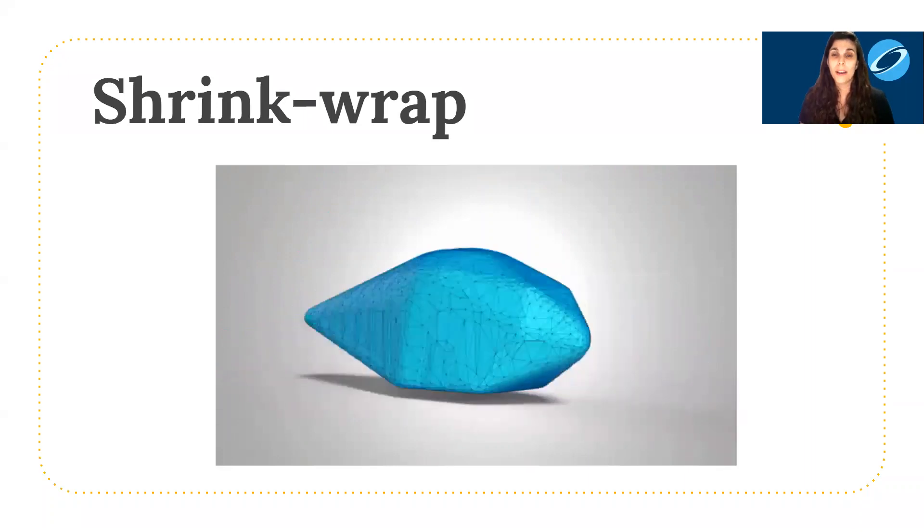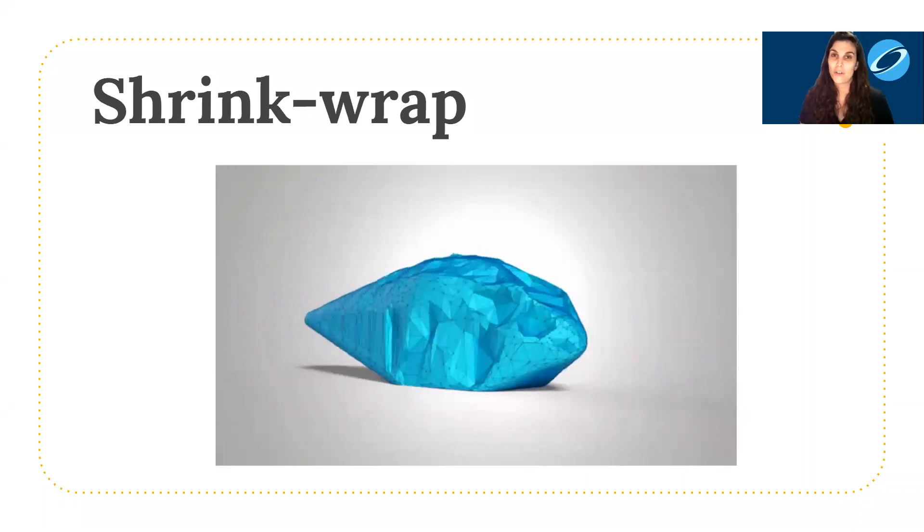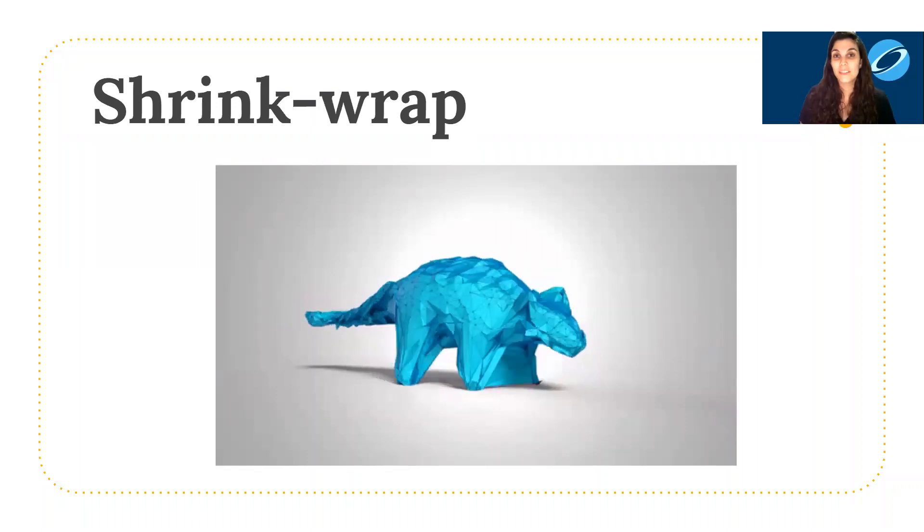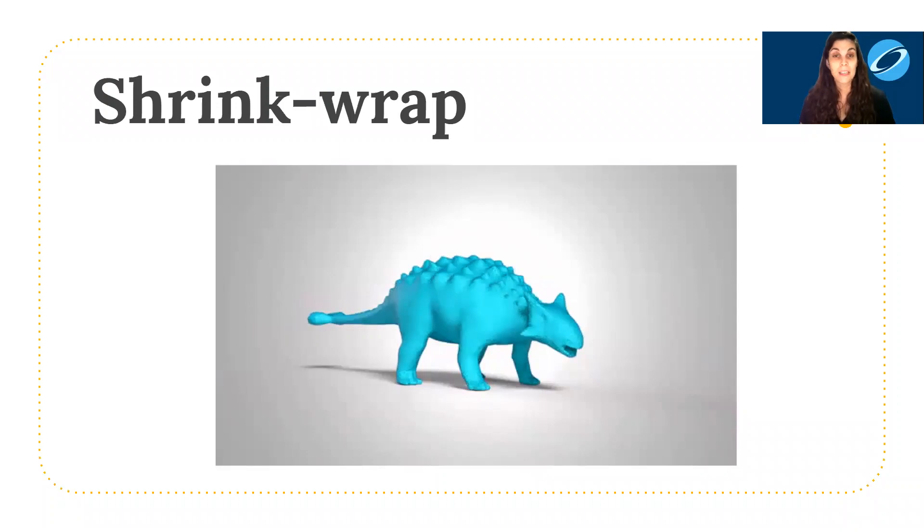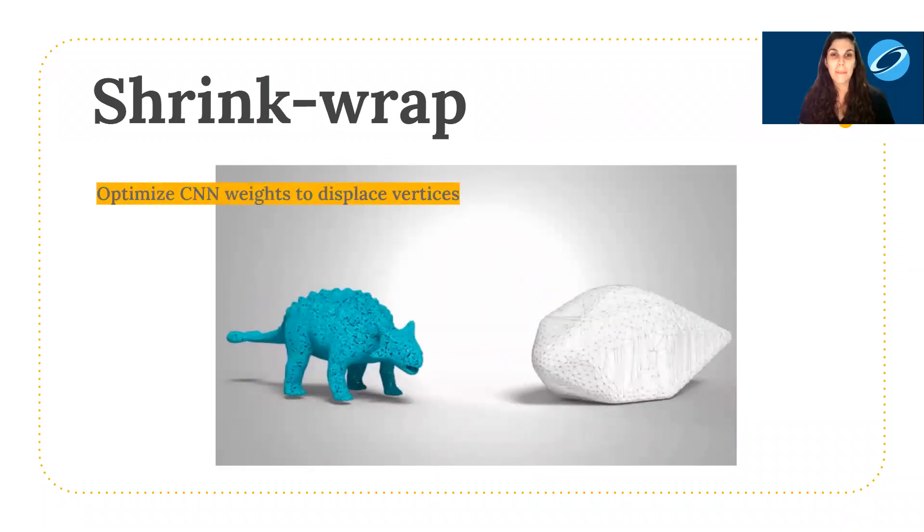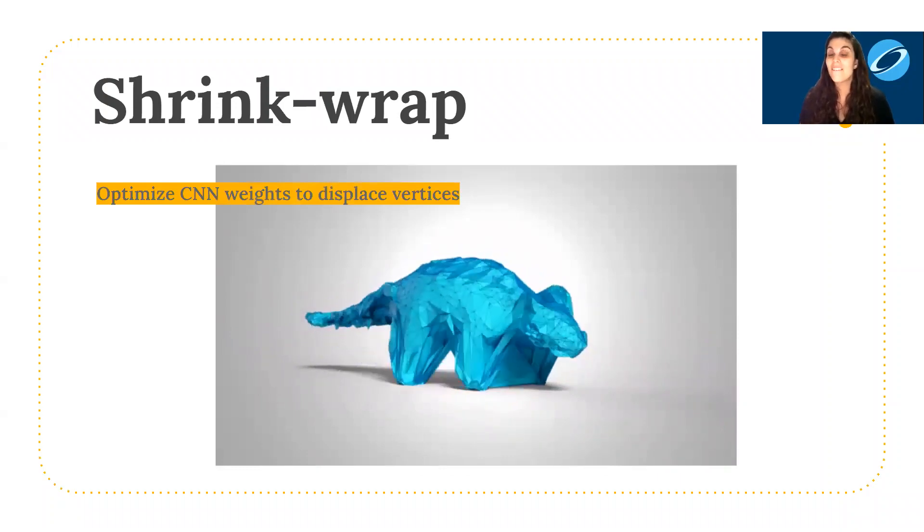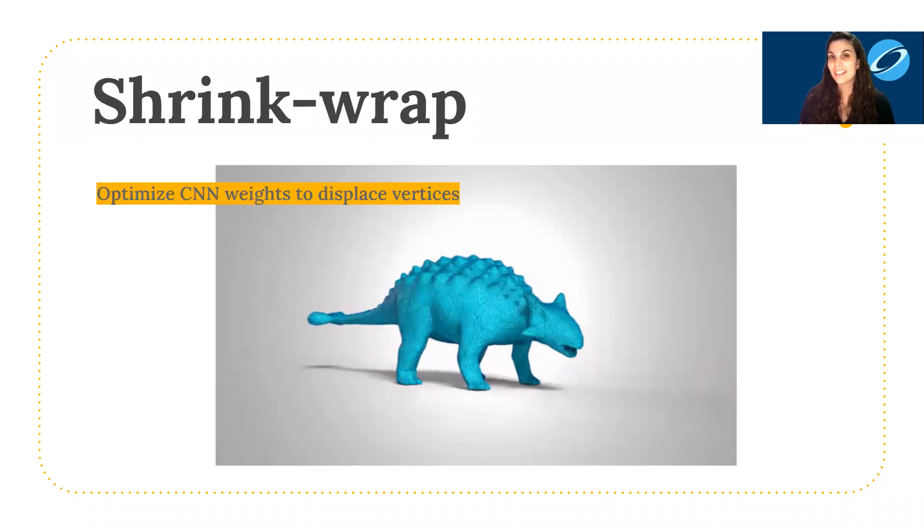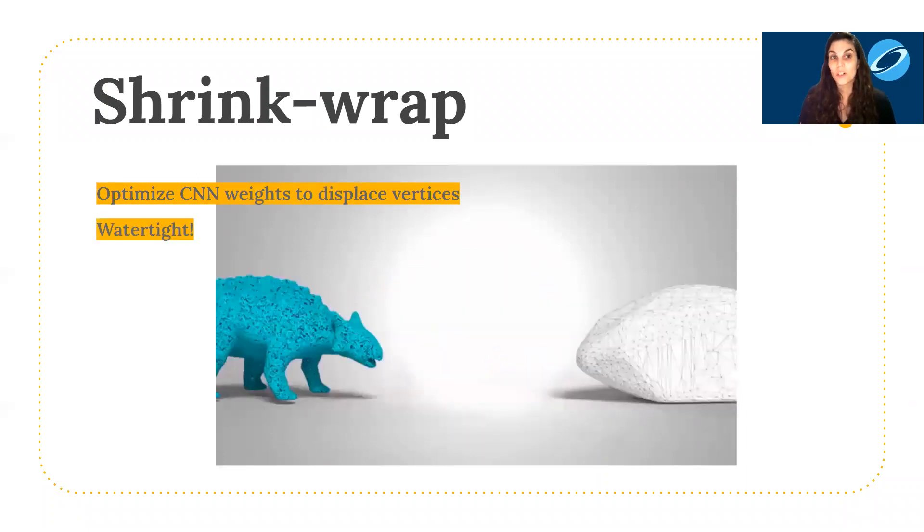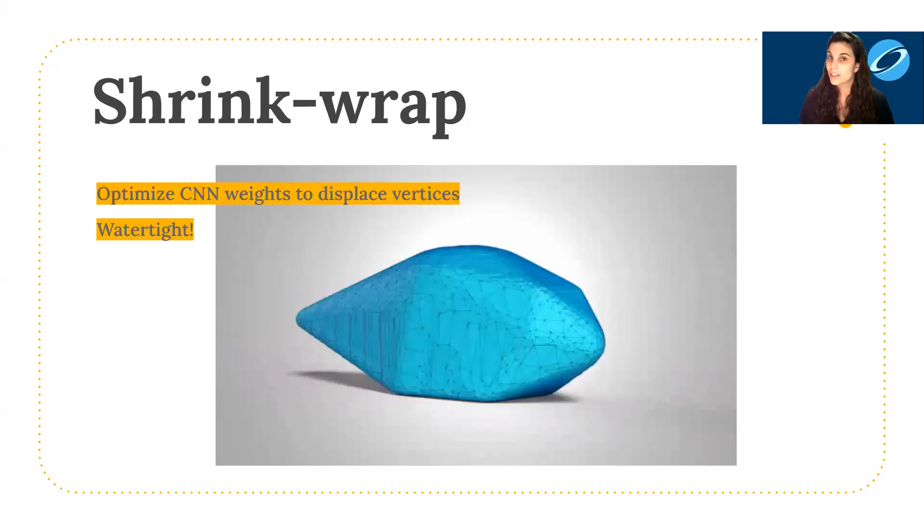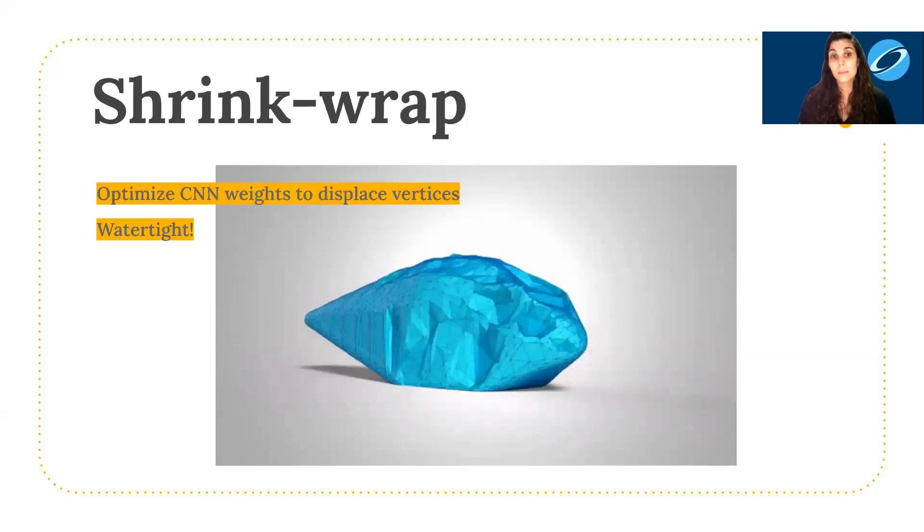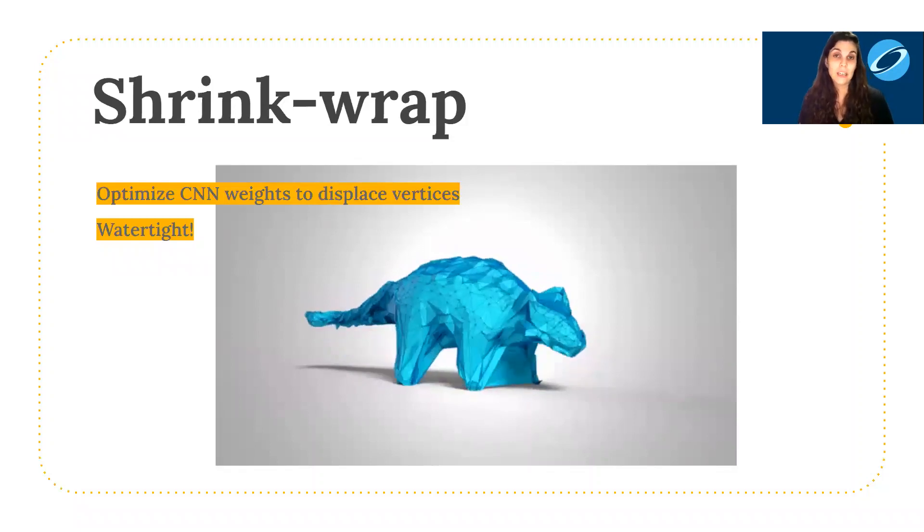Starting with an input point cloud and an initial deformable mesh, a CNN iteratively deforms the mesh to shrink wrap the input point cloud. Specifically, the CNN weights are optimized to displace the vertices of the initial mesh such that it fits the input point cloud. This ensures that the reconstruction is watertight, which is especially important since the input may contain holes or low-density samples.